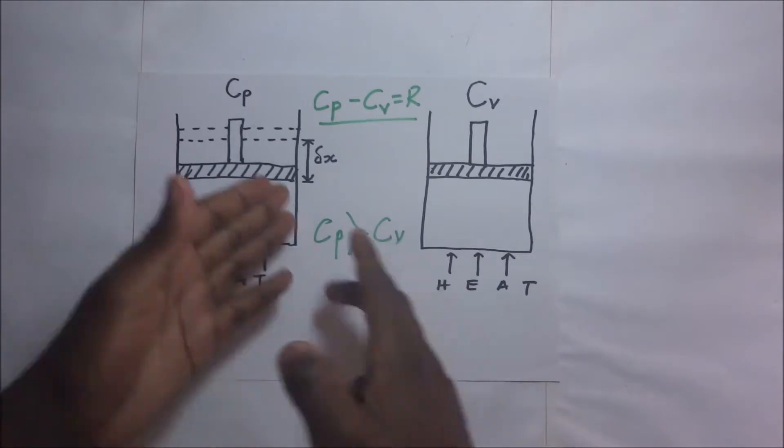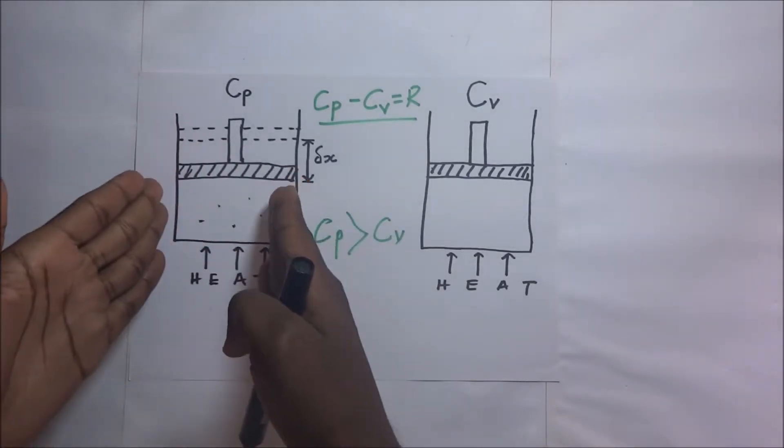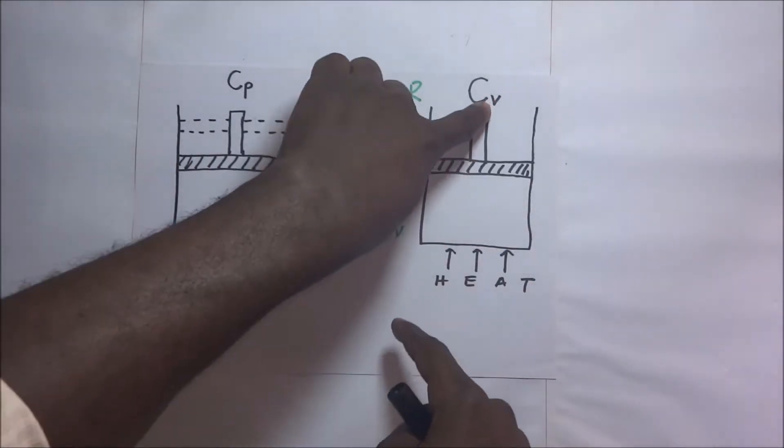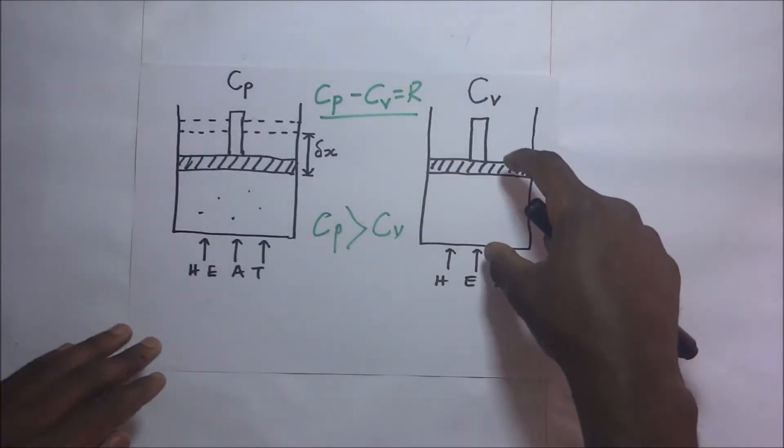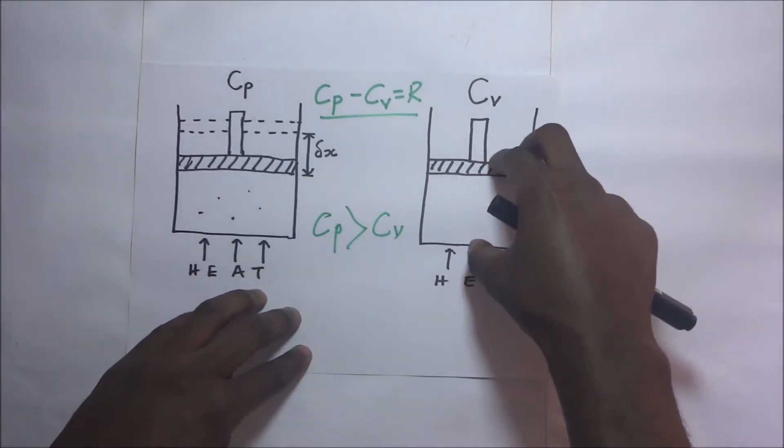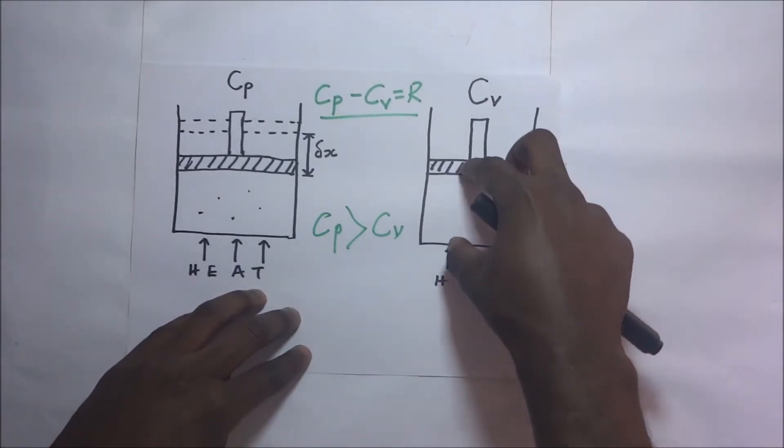But then when we compare this kind of process where we hold the pressure constant, when we compare this process to this process where the volume is constant, the volume being constant means that this piston won't move up. This volume is static. This piston won't move. This volume is constant.